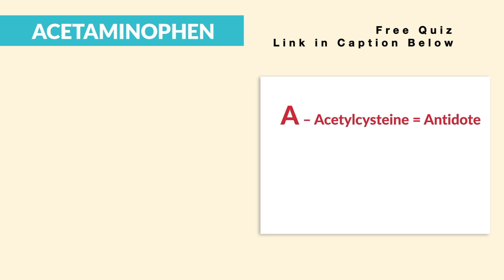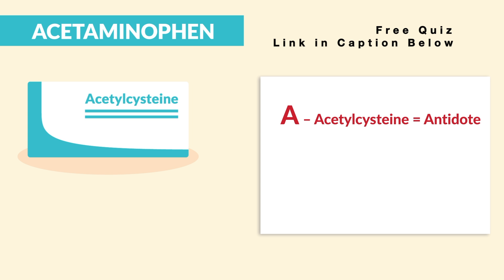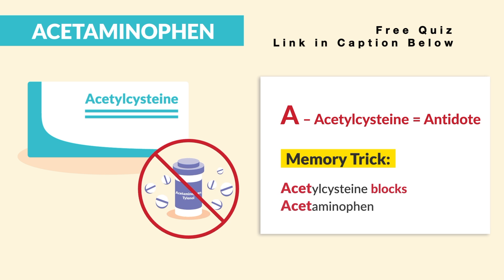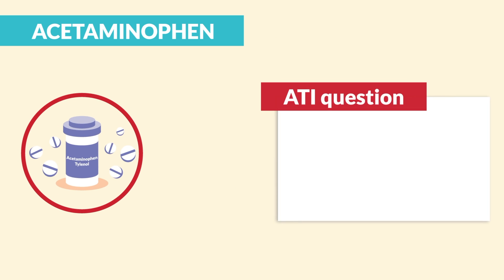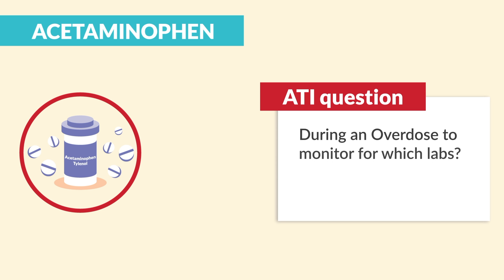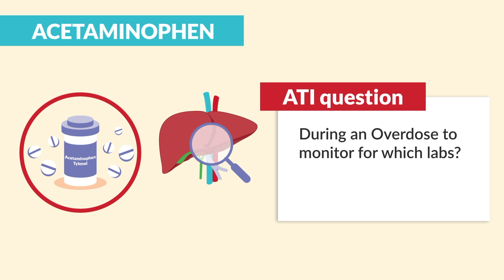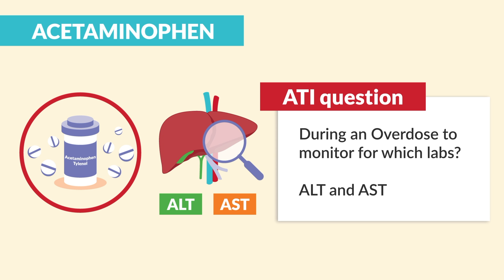The last A is for acetylcysteine, which is the antidote for acetaminophen. The memory trick is pretty simple: acetylcysteine blocks acetaminophen. ATI asked a very interesting question — during an overdose, which labs do you monitor for? Since acetaminophen is hard on the liver, we monitor the liver labs, both ALT and AST. Big test tip right there.